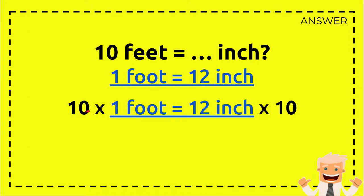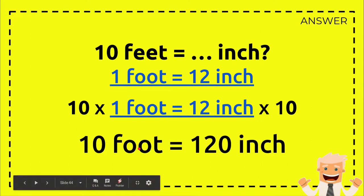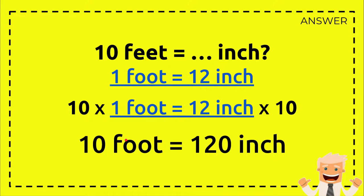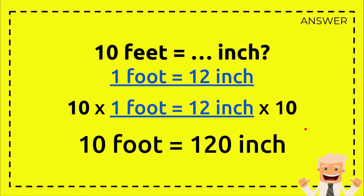10 times 1 foot equals 10 feet. This is not foot, this is feet actually, because the plural form of foot is feet. And 10 times 1 foot equals 10 feet, and 12 inches times 10 equals 120 inches. And that's it, that's the answer.